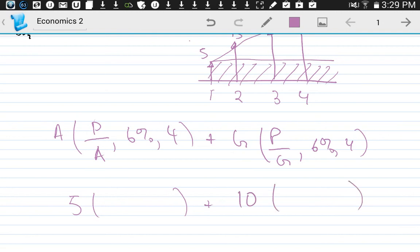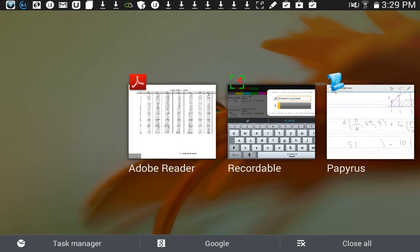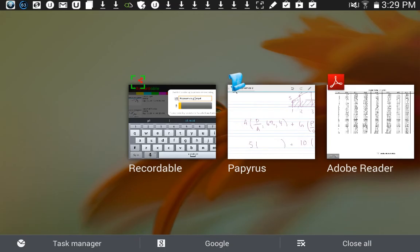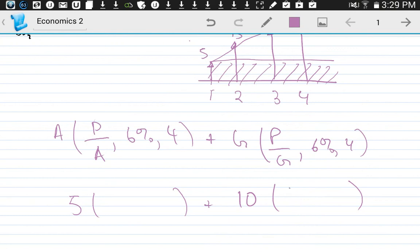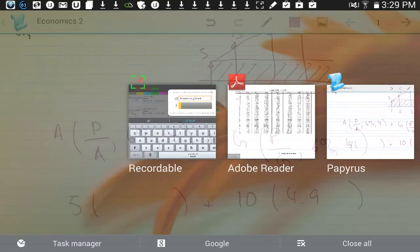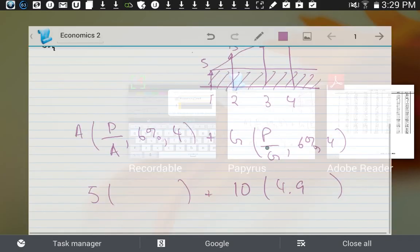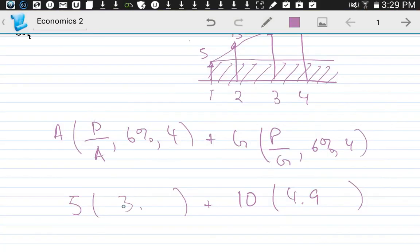We look at the table: P over G, we have 4.9, and P over A, 3.5.